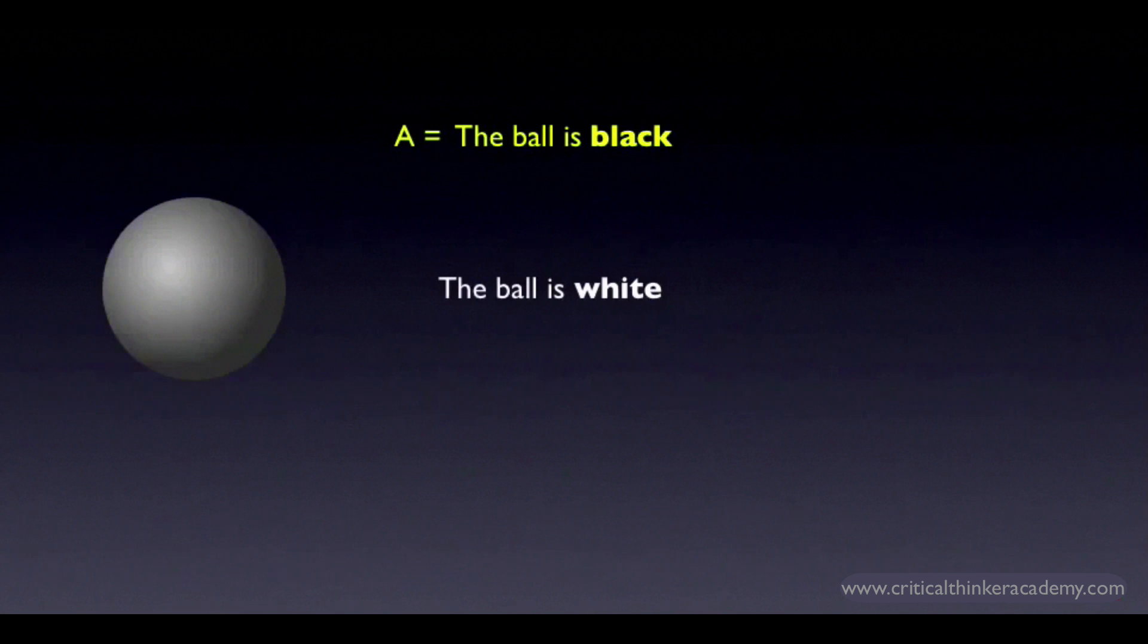But if the ball is gray then A, the ball is black, is false since gray is not black. But if A is false then the contradictory of A must be true. But the ball is white is not true. It's false as well. Both of these claims are false and that's not supposed to be possible if these are genuine contradictories of one another.